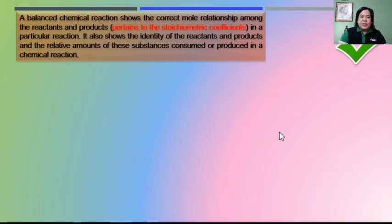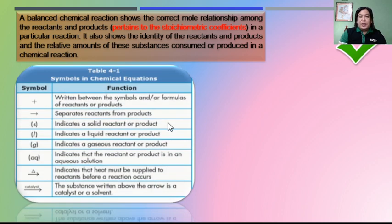So what is a balanced chemical equation? A balanced chemical reaction shows the correct mole relationship among the reactants and products. This pertains to the stoichiometric coefficient that we'll be using when we balance an ordinary chemical equation.